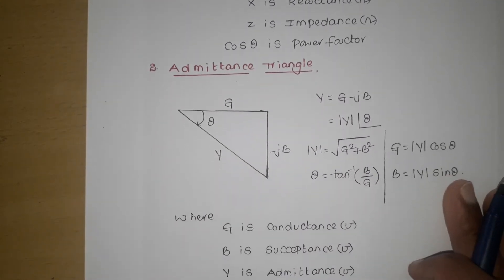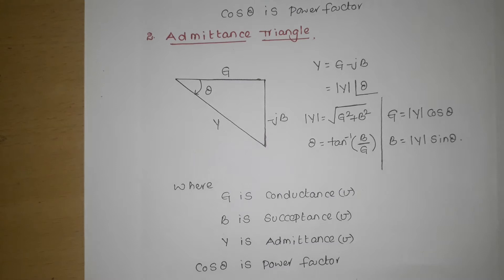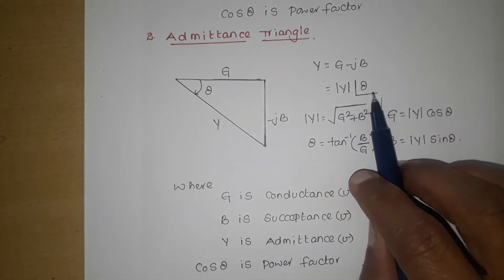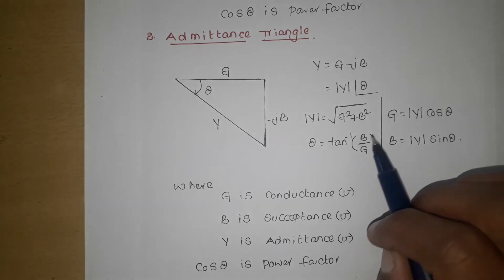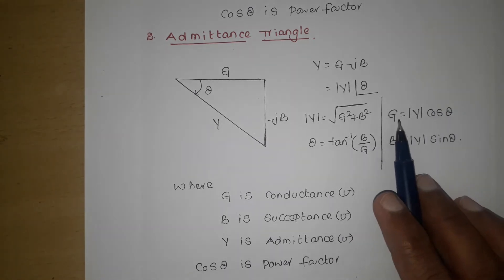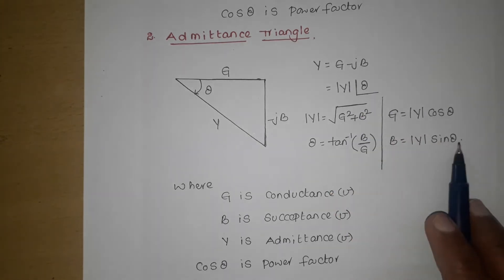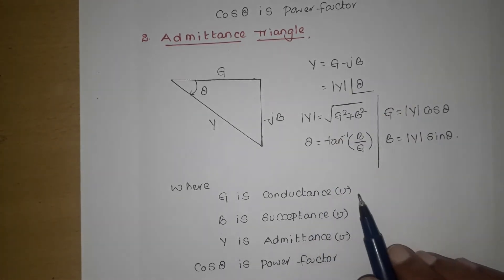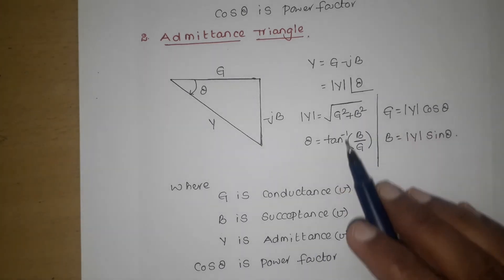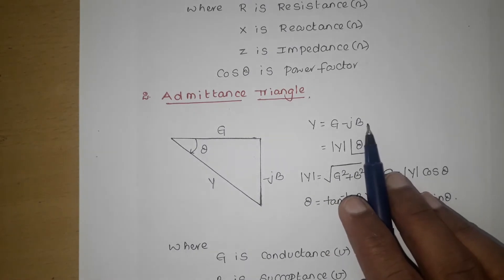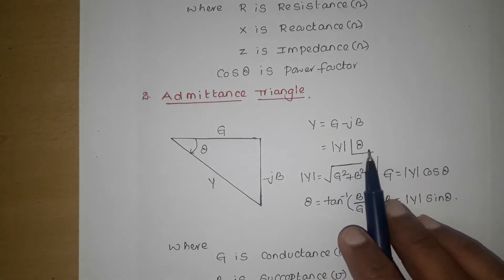Similarly, admittance triangle. Here in a similar manner, Y equals G minus jB, and the same Y equals mod Y at an angle of theta. Mod Y equals root over G squared plus B squared, and theta equals tan inverse B by G. Similarly, G equals mod Y cos theta and B equals mod Y sin theta. Here G is called conductance, with unit mho or siemens, and B is susceptance, with unit mho, and Y is admittance, with unit mho.